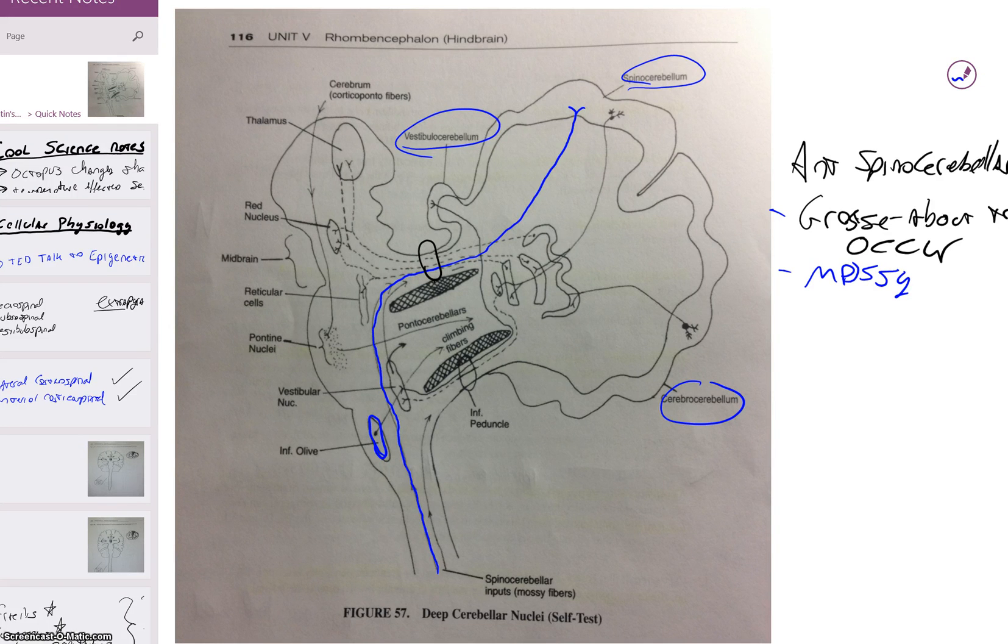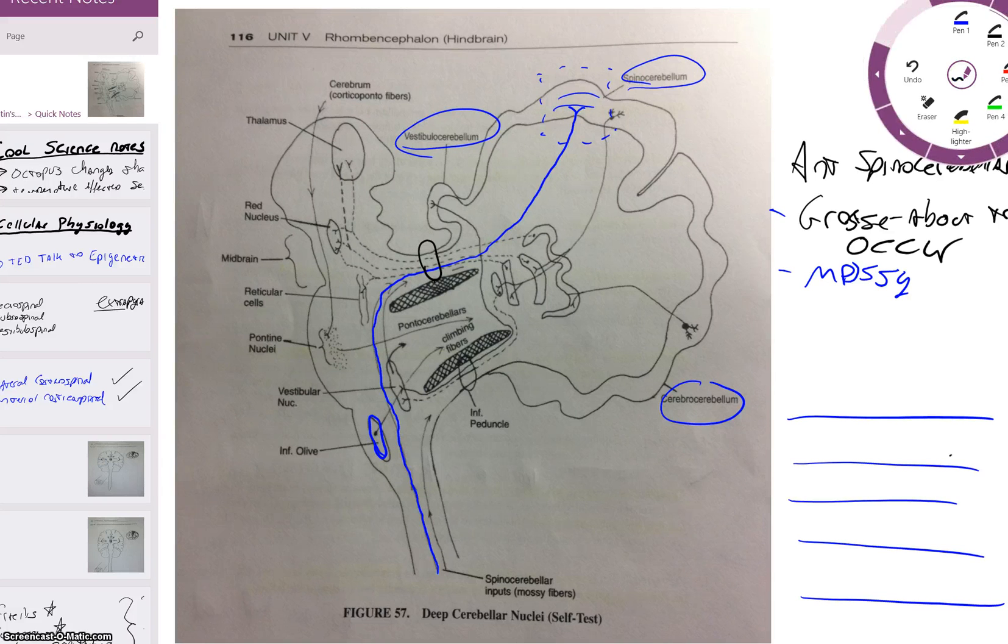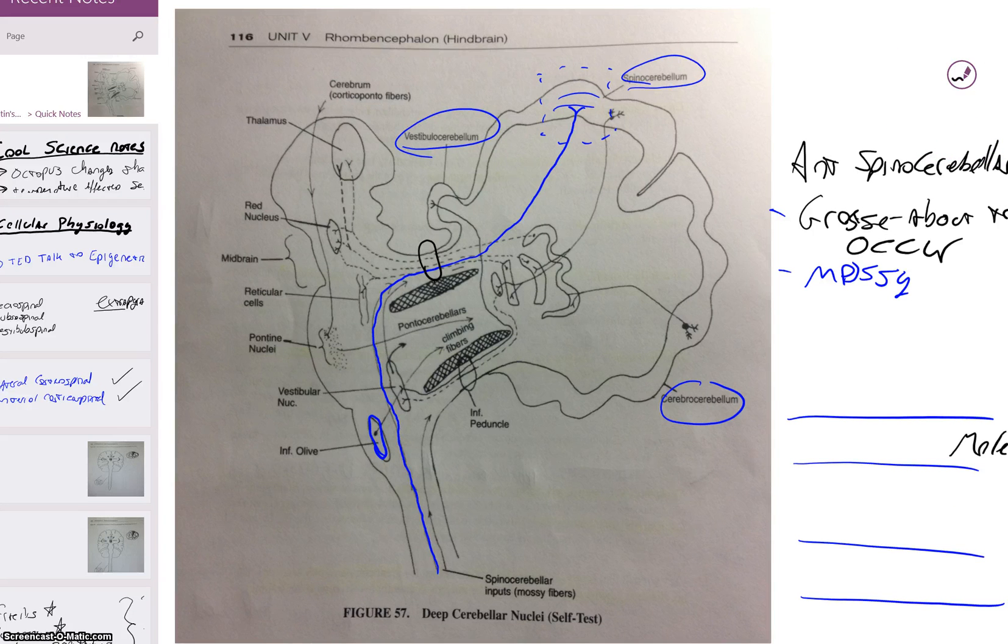Mossy fibers. We'll draw our little three layers. We'll zoom into this portion here. Three layers. Let's make this a different color. Remember we have the molecular layer, we have the Purkinje layer, and we have the granular layer.